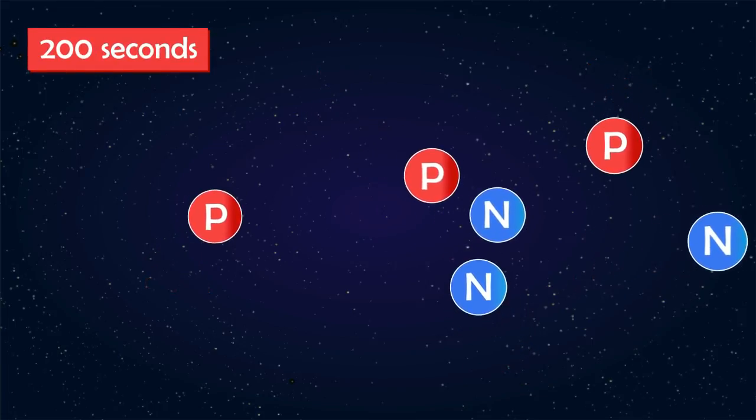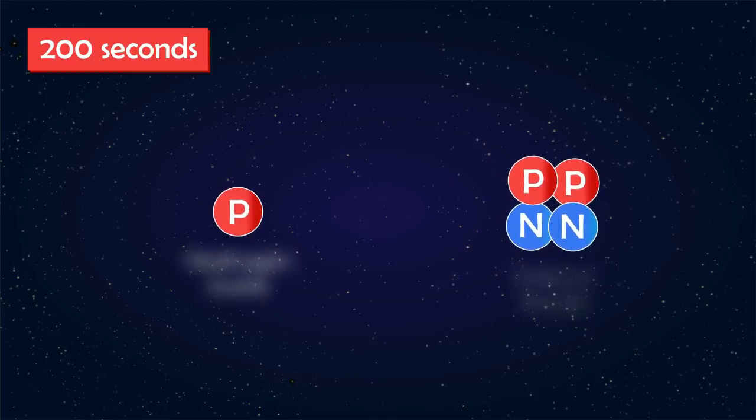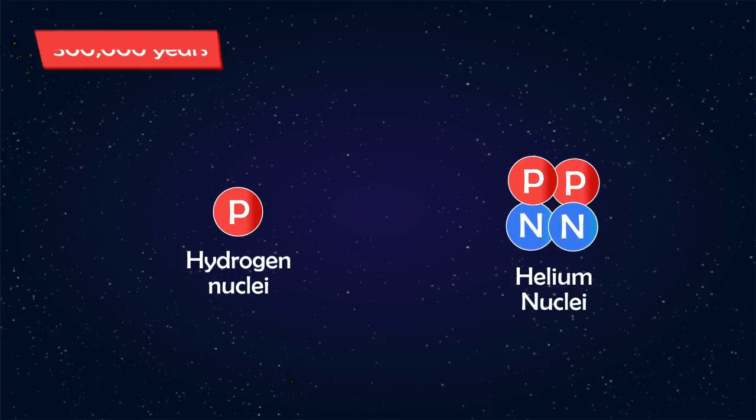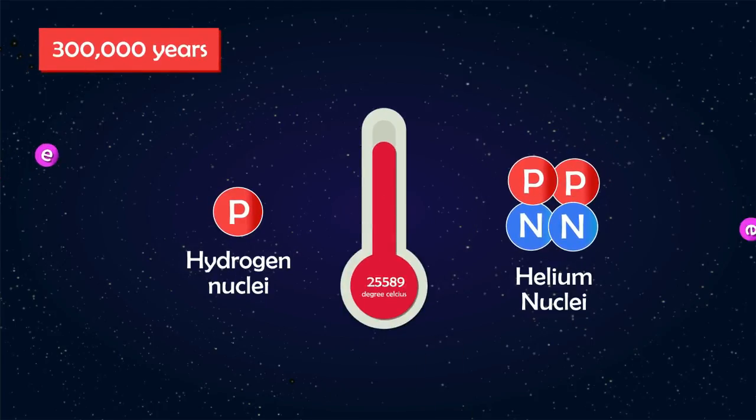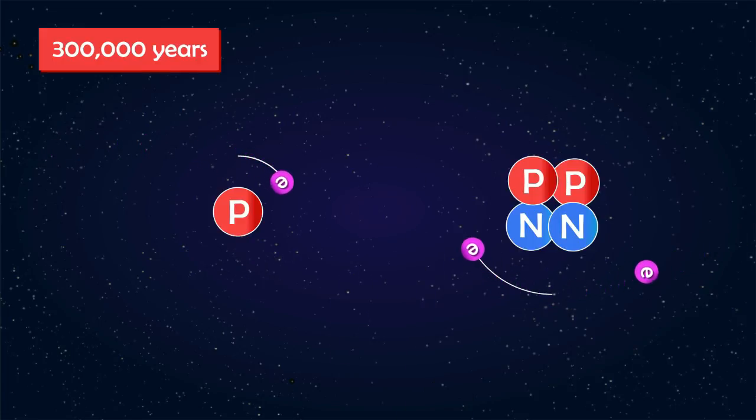Within the first 200 seconds of the universe, protons and neutrons start to come together to form the nuclei of simple elements like hydrogen and helium. It will take nearly 300,000 years for the universe to cool down to 1,000 degrees Celsius, cool enough for the electrons to pair up with the nuclei and form the first stable atoms.